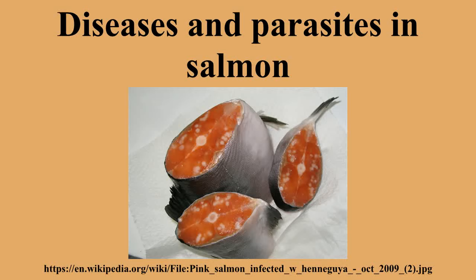It is strictly a fish parasite that cannot live in or affect warm-blooded animals, including man. According to Klaus Schally, molluscan shellfish program specialist with the Canadian Food Inspection Agency, Henneguya salminicola is found in southern BC and in all species of salmon. He has previously examined smoked chum salmon that were riddled with cysts, and some sockeye runs in Barkley Sound are noted for the high incidence of infestation.